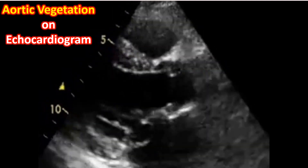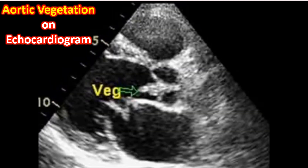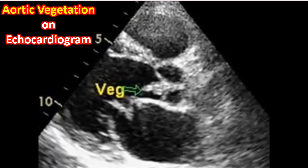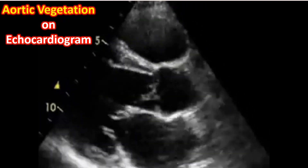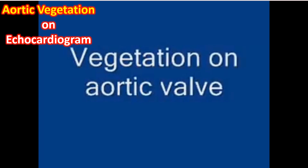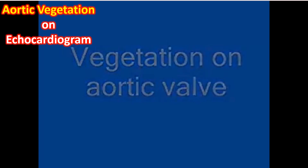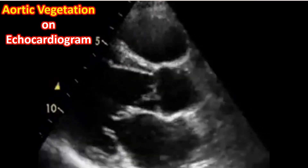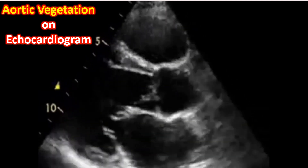Here is an echocardiogram in parasternal long axis view showing vegetation on the aortic valve which is prolapsing into the left ventricular outflow tract during diastole. You can see it very nicely. It is a fairly good sized vegetation in a case of infective endocarditis.